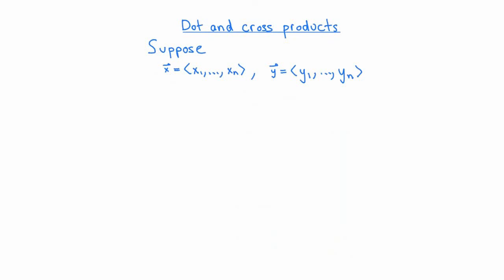I'd like to also remind you of the definitions of the dot and cross products. Let's suppose that we have two vectors x and y in vn with components x1 to xn and y1 to yn. The dot product of these two vectors is what you get by taking x1 times y1 plus x2 times y2 plus dot dot dot xn times yn. The notation for the dot product of two vectors is just to put a dot between them. Notice that the output of the dot product of two vectors is always a scalar.